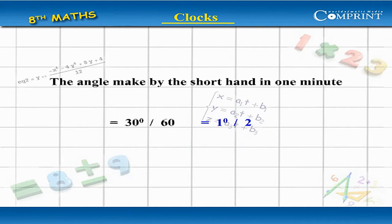The angle made by the short hand in one minute equals 30 degrees divided by 60, equal to 1/2 degree.